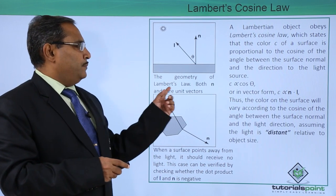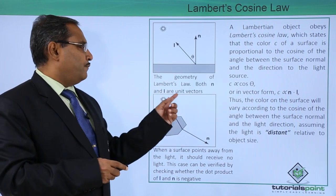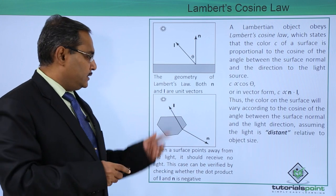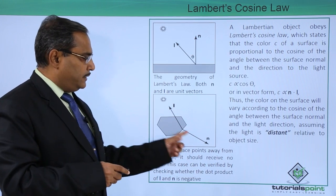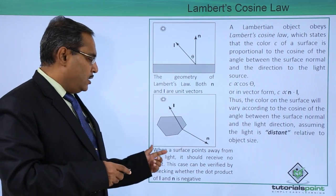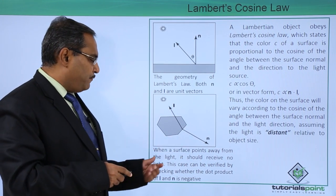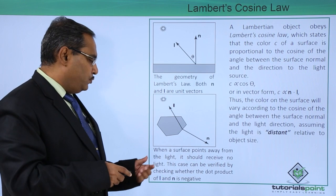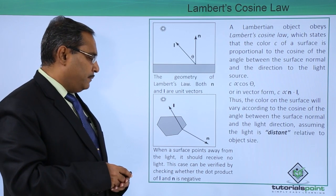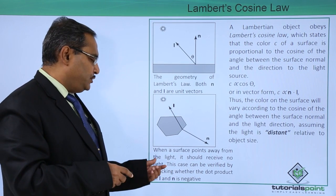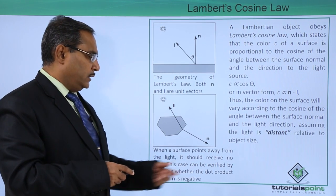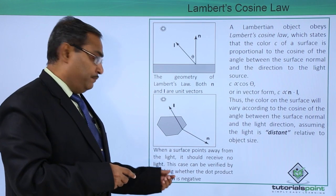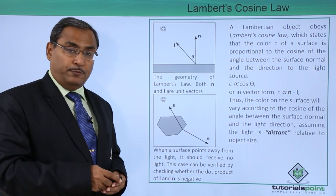Regarding the geometry of Lambert's law, both n and i are unit vectors. When a surface points away from the light, it should receive no light, and this case can be verified by checking whether the dot product between i and n is negative or not.